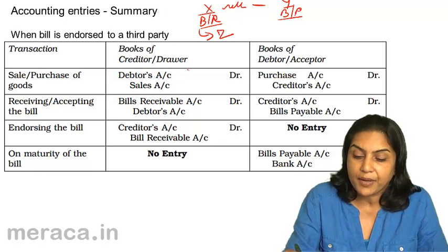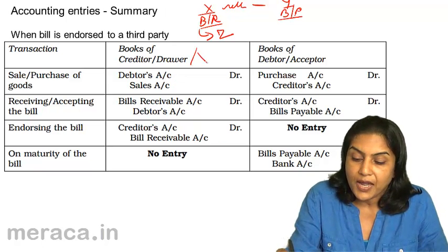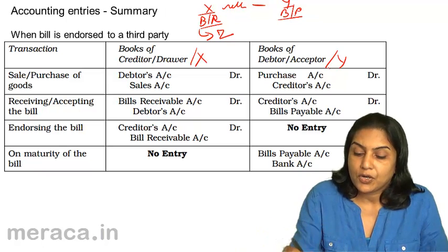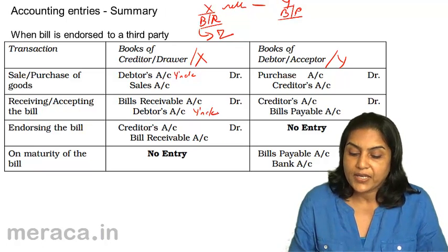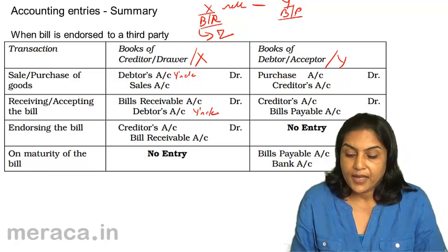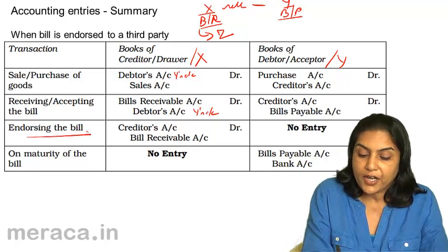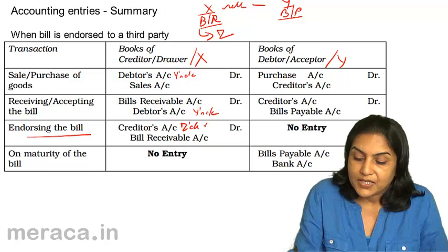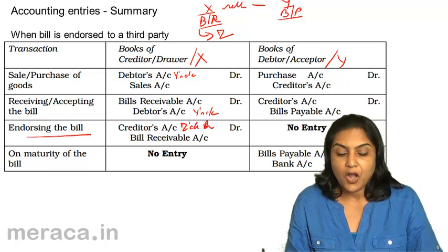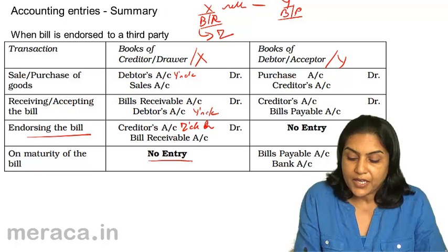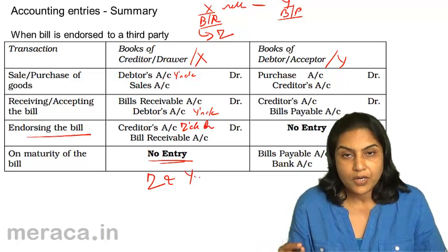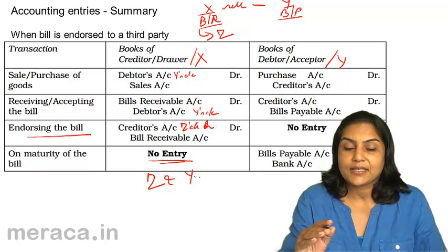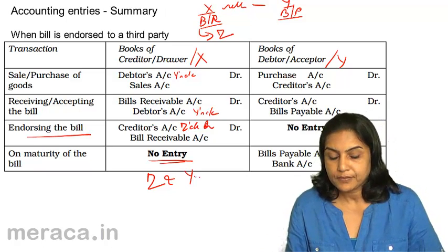In the books of X: on sale of goods, Y's account debit to sales. Bills receivable account debit to Y's account. Then X endorses the bill to Z, so it becomes Z's account debit to bills receivable. On maturity of the bill, there is no entry because the transactions are between Z and Y — Z presents the bill to Y, Y honours the bill, and X does not come into the picture.